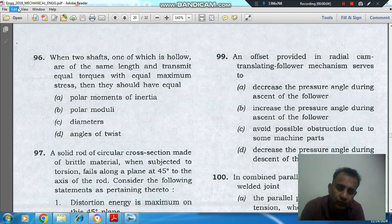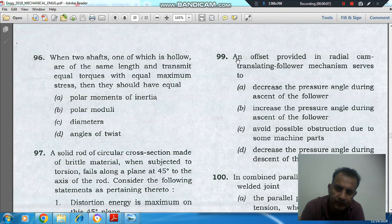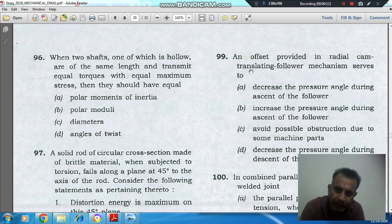Hello, welcome again. We are solving Engineering Mechanics 2018 mechanical engineering paper, question number 99. An offset provided in radial cam translating follower mechanism serves to: